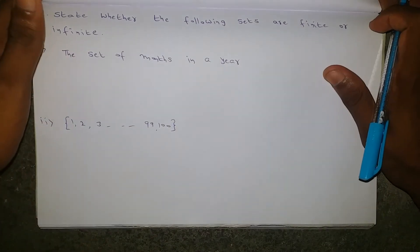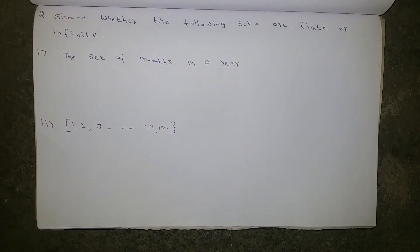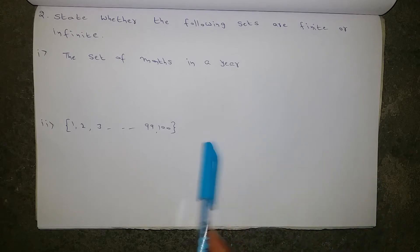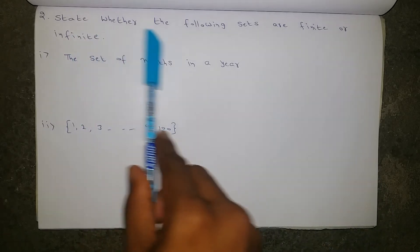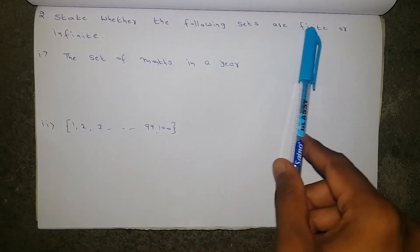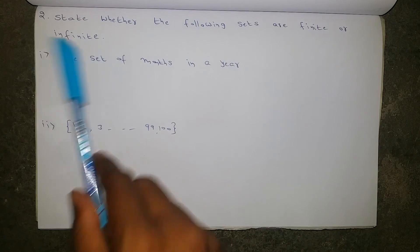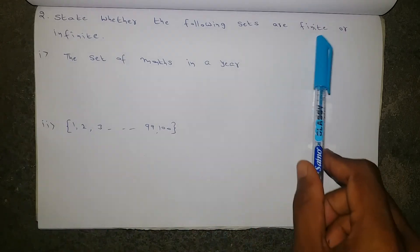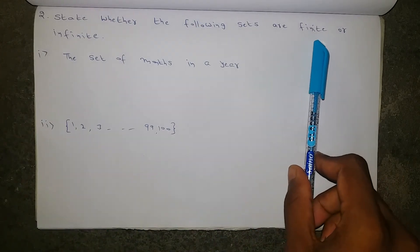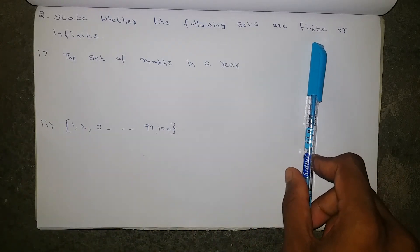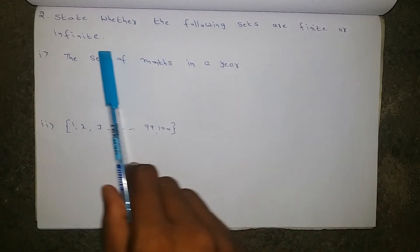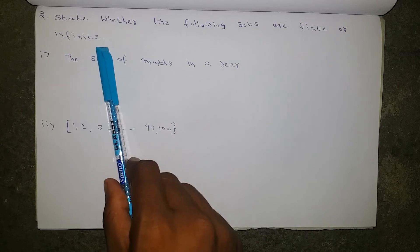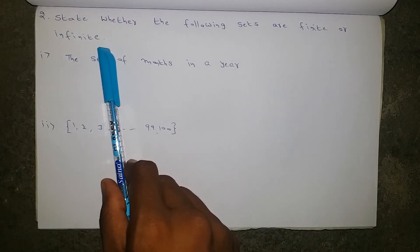Now let's move to the second bit. In the previous bit we discussed whether it is an empty set or not. But in this case, state whether the following sets are finite or infinite. Finite means countable elements should be there. Infinite means an uncountable number of elements.